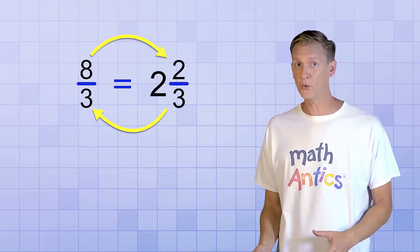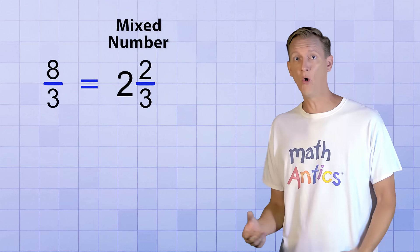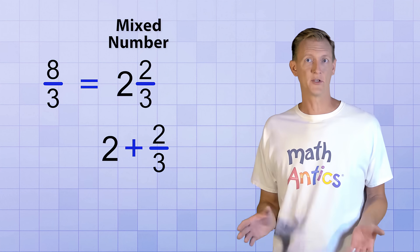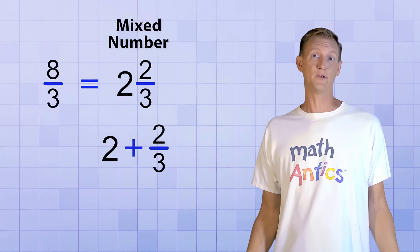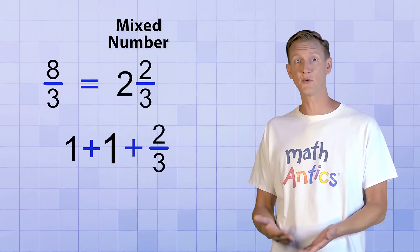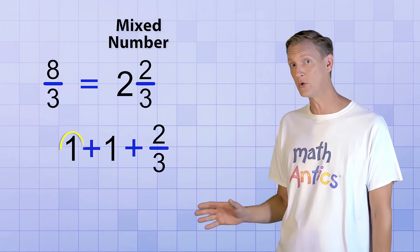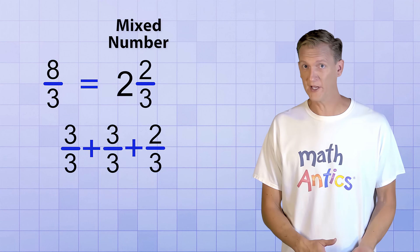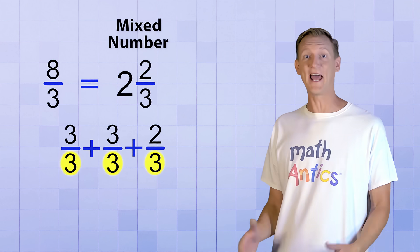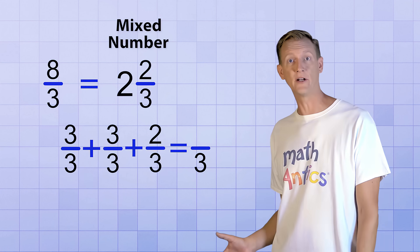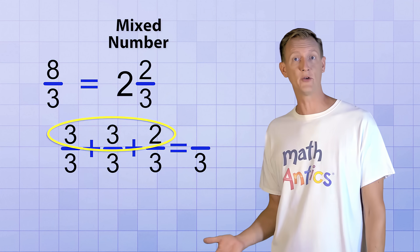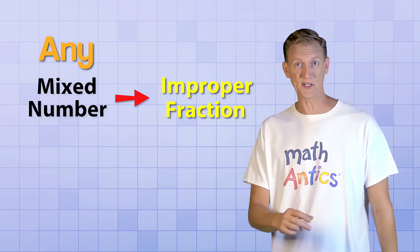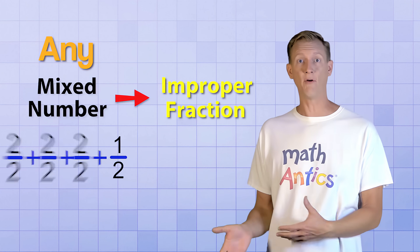To show you can go back and forth between these two forms: in the mixed number 2 and 2 thirds, the whole number 2 and the fraction 2 thirds are being added together — that's really important to know, even though the plus sign isn't usually shown. So 2 and 2 thirds is really 2 plus 2 thirds. We can expand 2 into 1 plus 1, giving us 1 plus 1 plus 2 thirds. Then we replace each 1 with the whole fraction 3 over 3, giving us 3 over 3 plus 3 over 3 plus 2 over 3. Since these fractions all have the same denominator, we add them: the denominator stays 3, and the numerator is 3 plus 3 plus 2, which equals 8. And we're back to our original improper fraction, 8 over 3.